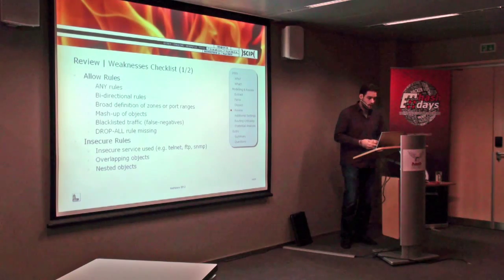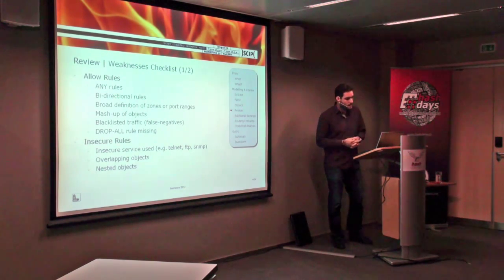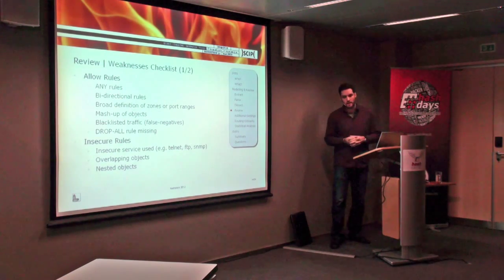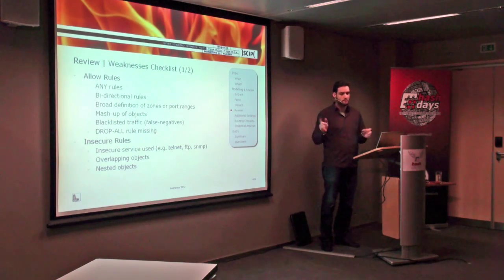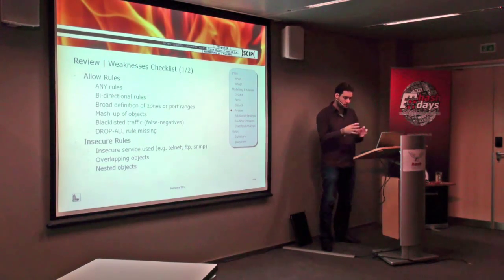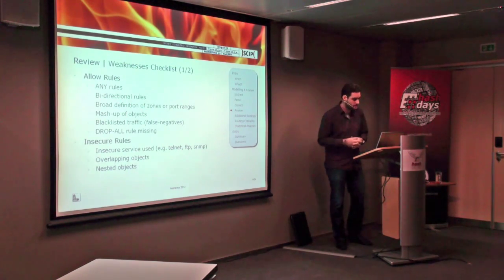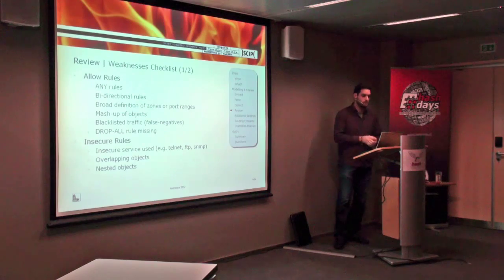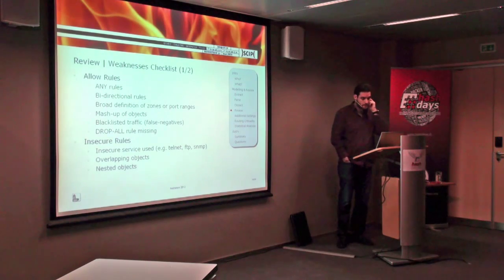These are some items on our checklist. The worst thing is any-rules, which allow any traffic. More complex weaknesses include mashup of objects — for example, having a high-security system and a public service defined in the same rule but at different security levels, which is very problematic. We also try to identify insecure rules using very old-school protocols without encryption, overlapping objects, and similar issues.